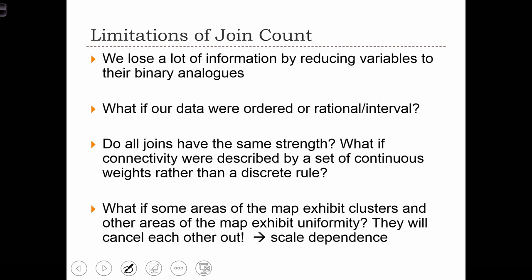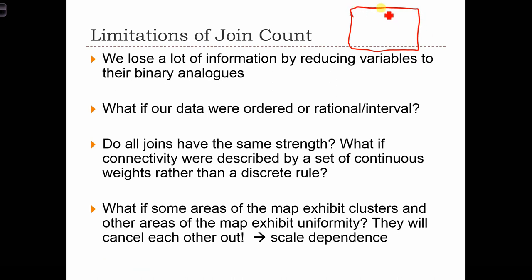Finally, what if some areas of the map exhibit clusters and other areas don't exhibit clustering? This is an example of scale dependence. Imagine a case — using a schematic diagram — where the map was more or less divided in half. On the right-hand side, imagine the small units of analysis are polygons. On the left-hand side, all of the polygons were black on the top and all white on the bottom.